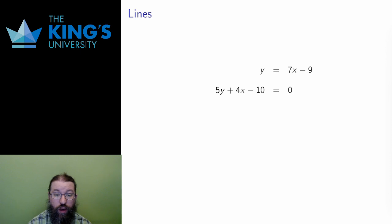Also, the line 5y plus 4x minus 10 equals 0. This also fits the description. The only difference here is that everything is gathered on one side of the equation, which is often convenient to do.